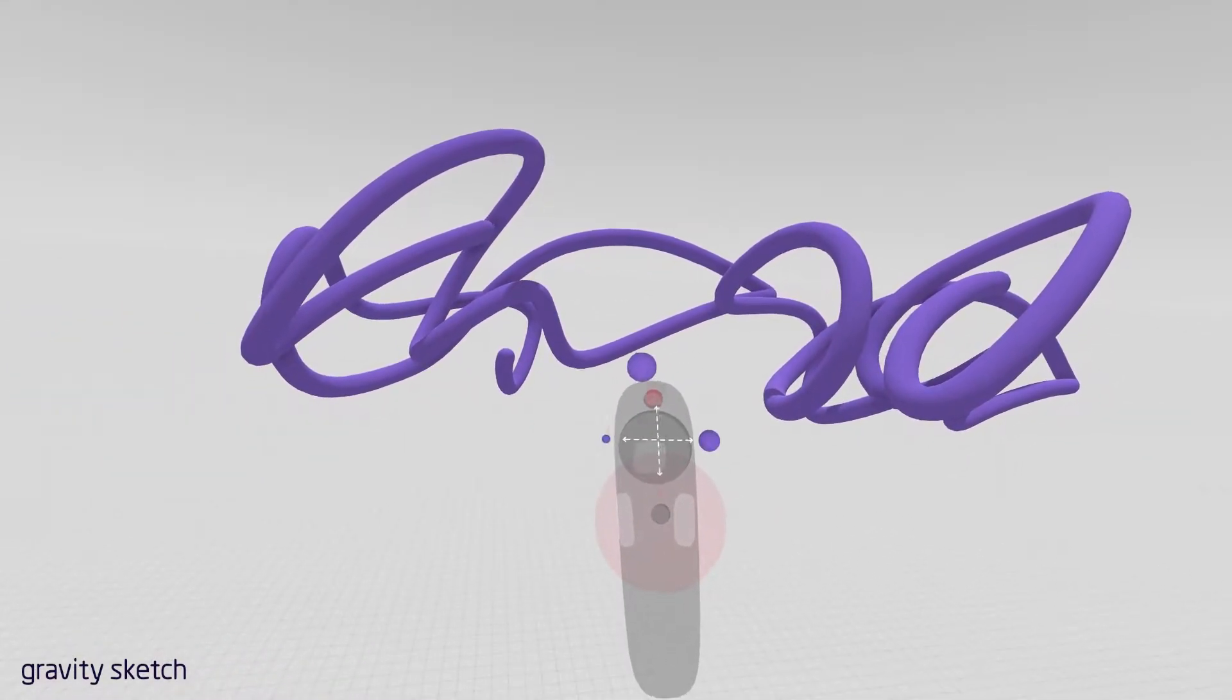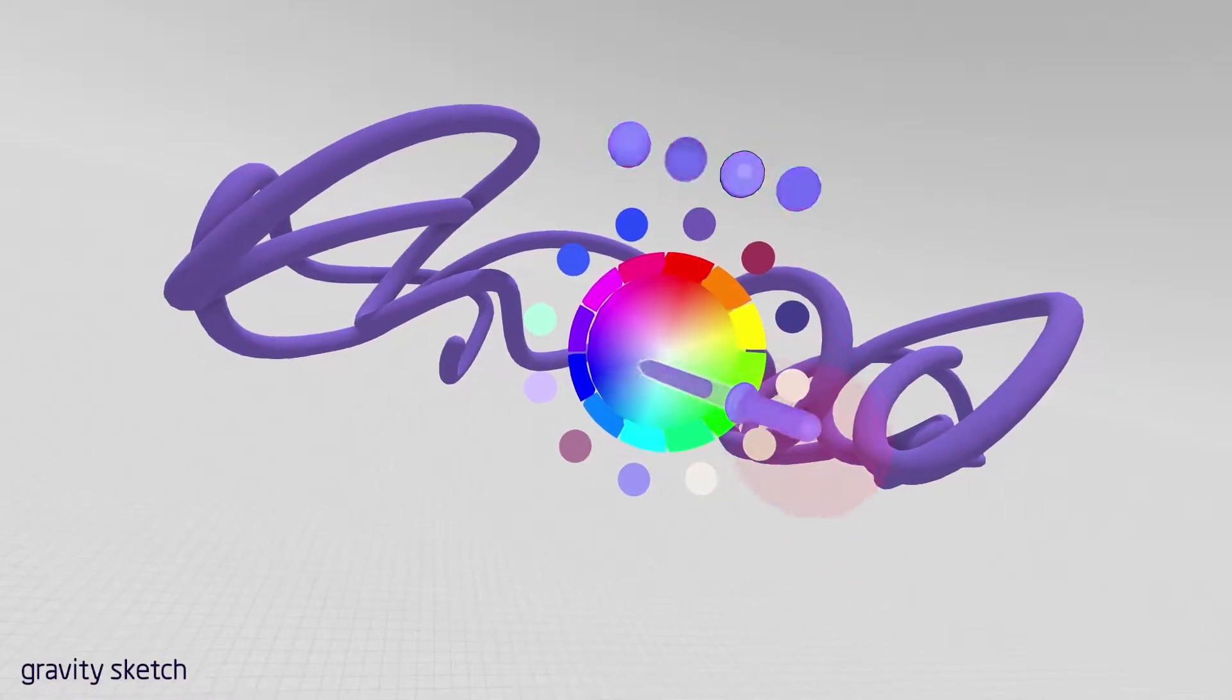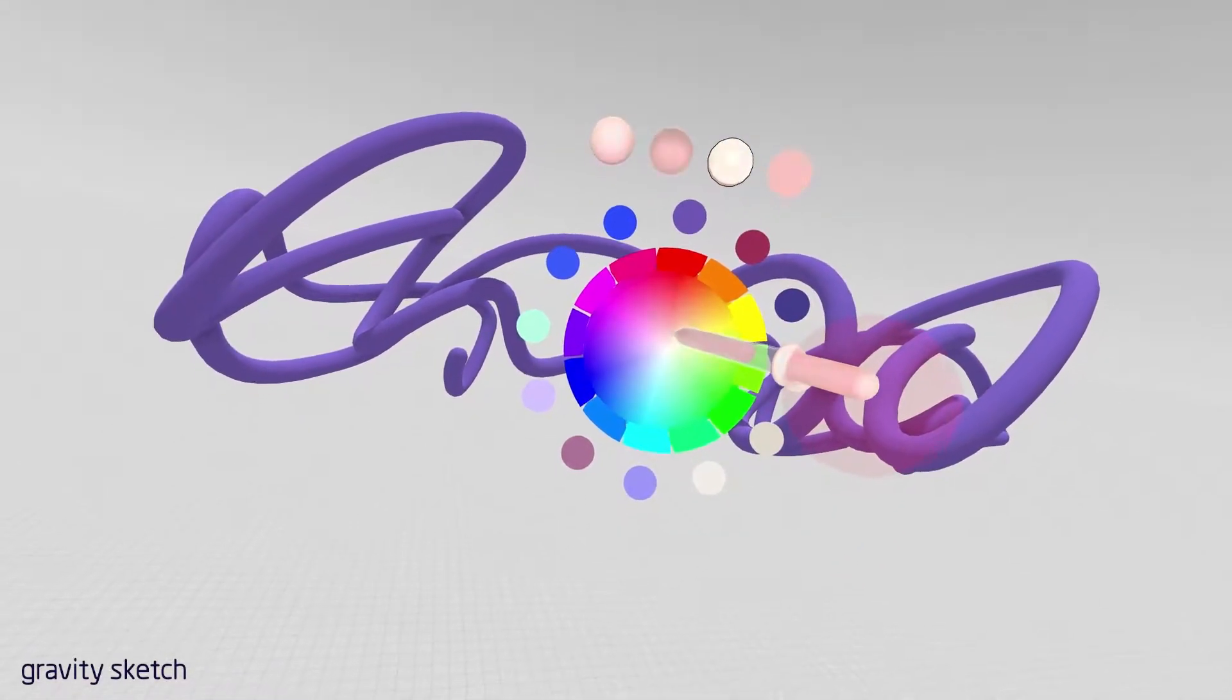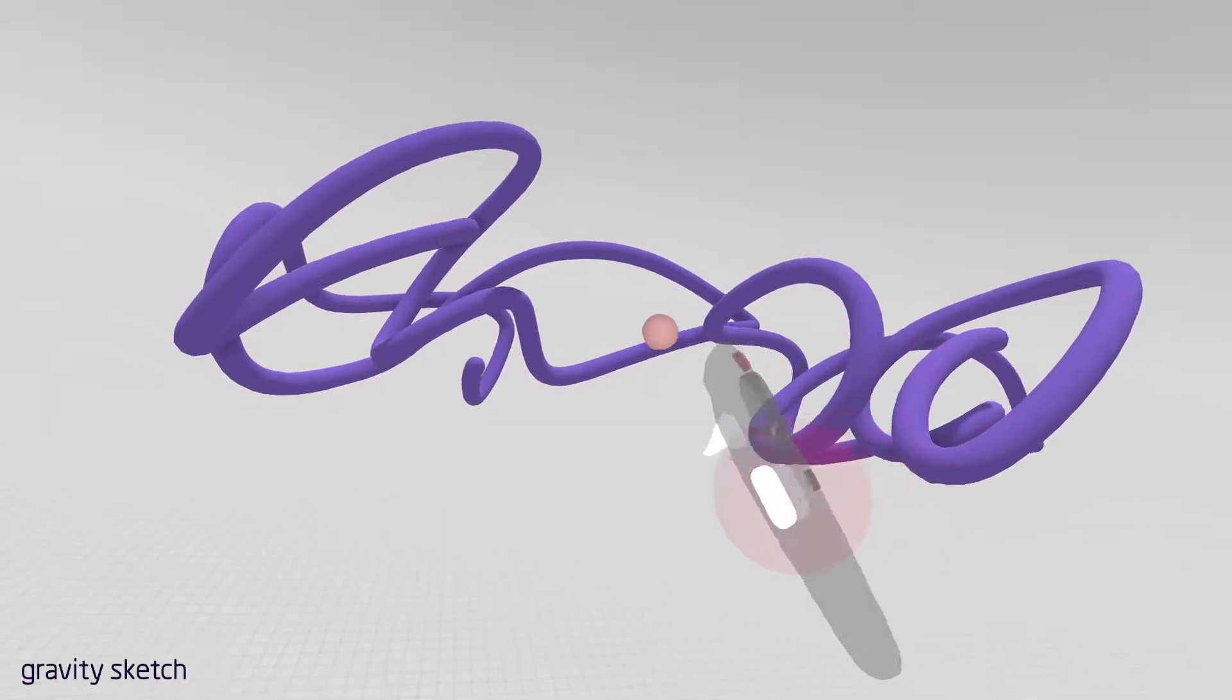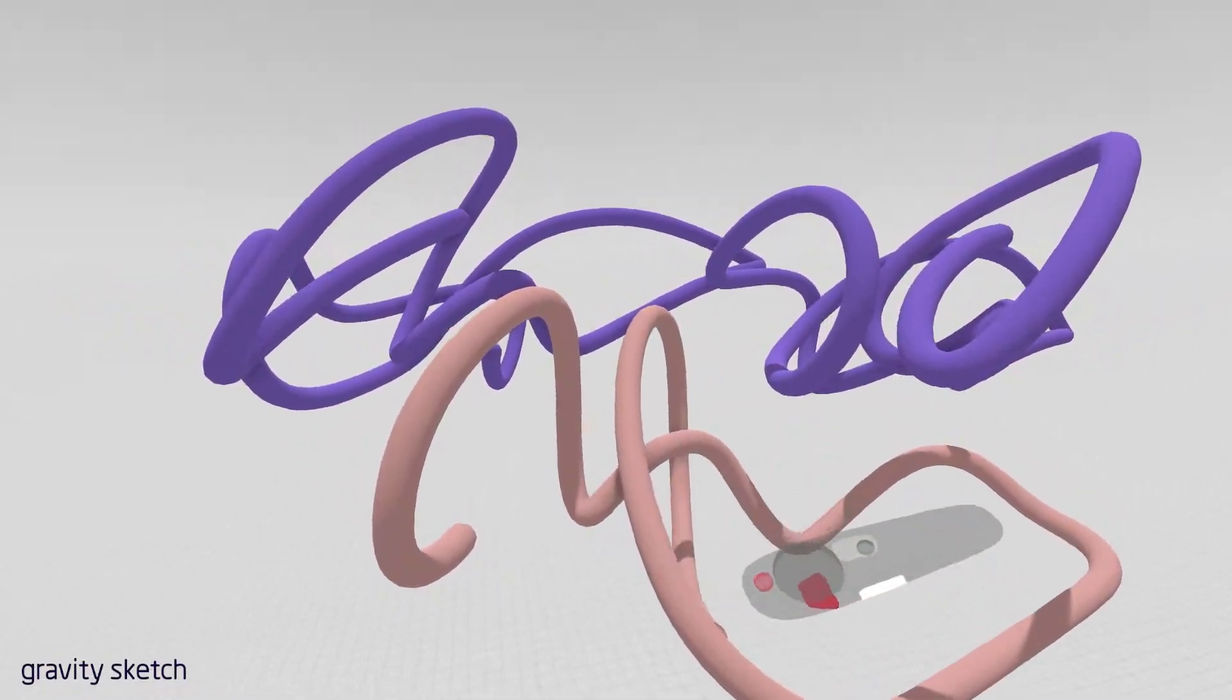To change color, press and hold your trackpad. Move your hand around while you're holding the trackpad. Release and that's the color that you'll have when you sketch next.